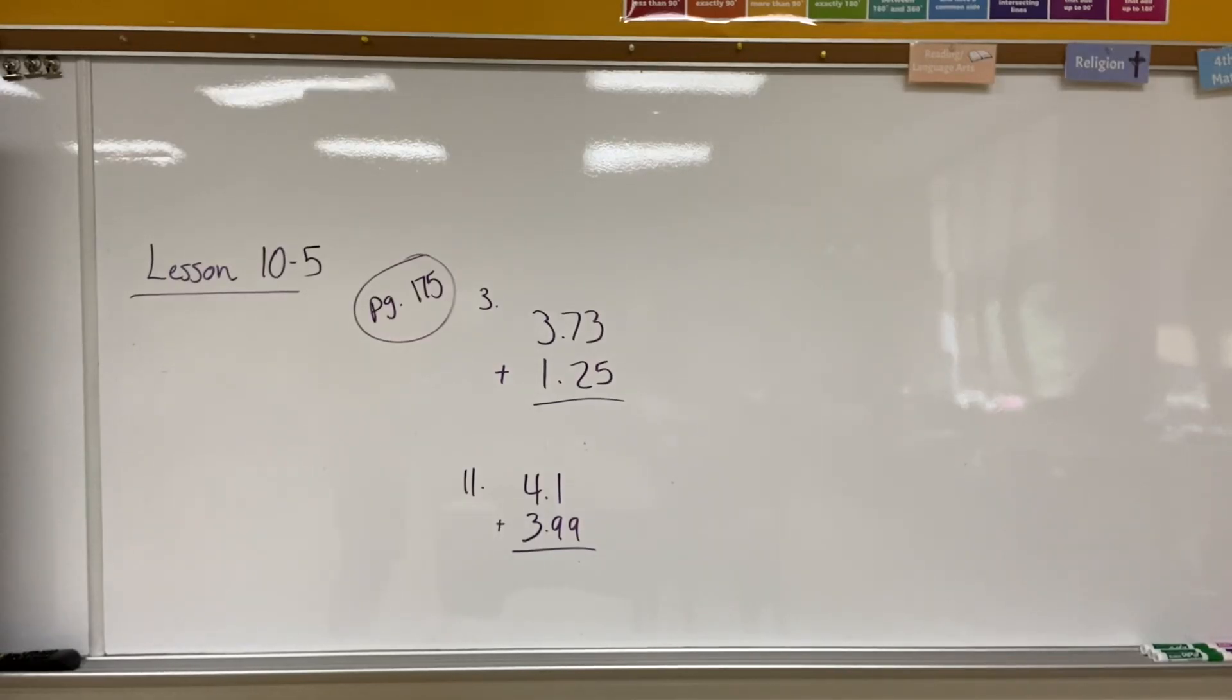All right my fifth grade friends, we're going to be on page 175 of your workbook. We're going to be doing practice problems number three and eleven. The directions say use the place value algorithm to add. That's just a fancy way of saying make sure that your decimal places are lined up. Make sure that you're starting from the far right hand side and adding like you normally would. If you have any questions on how to add decimals up to the hundredth place, please let me know when you come to class tomorrow.